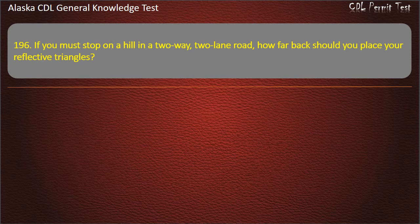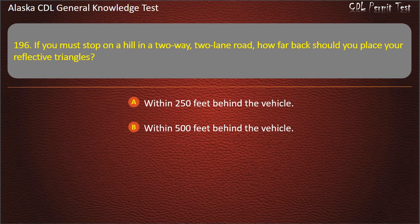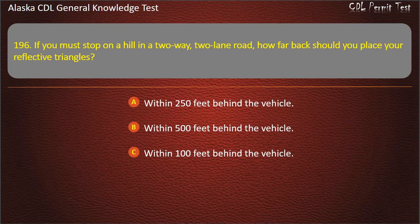Question 196. If you must stop on a hill in a two-way, two-lane road, how far back should you place your reflective triangles? Within 250 feet, within 500 feet, or within 100 feet behind the vehicle. Answer: Within 500 feet behind the vehicle.